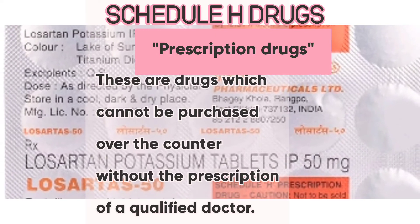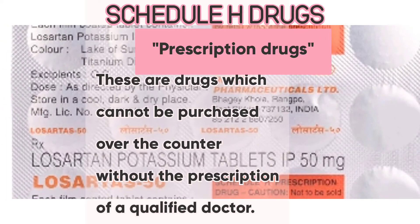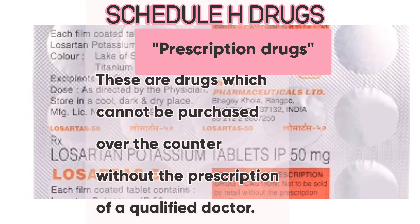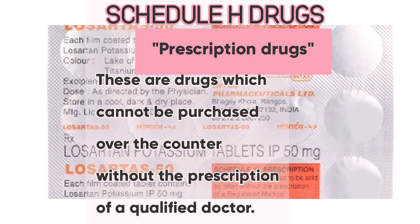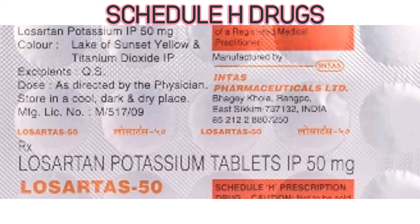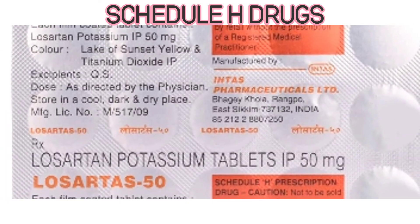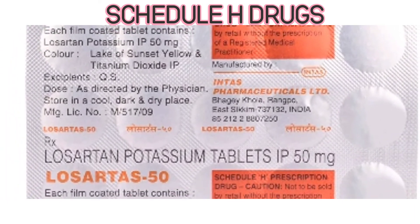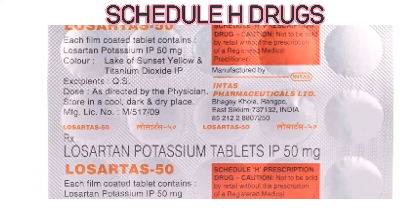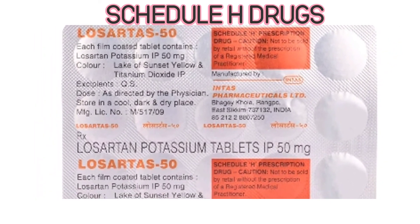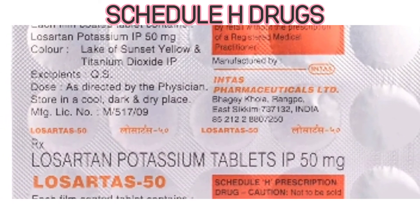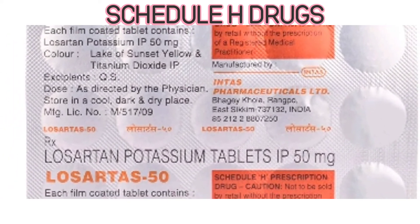What are Schedule H drugs? These are prescription drugs which cannot be purchased over-the-counter without the prescription of a qualified doctor. The drug label must display the text 'Rx' on the left top corner of the label and 'Schedule H drug'. The caution is: to be sold by retail on the prescription of a registered medical practitioner only.